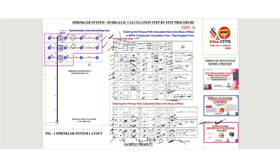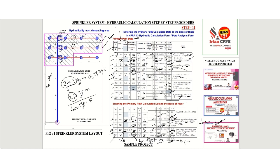The required flow is 214.1 GPM at 33.7 psi, excluding hose stream allowance. For ordinary hazard applications, the hose stream allowance is 250 GPM; for light hazard it is 100 GPM; for extra hazard it is 500 GPM. Adding 250 GPM hose stream allowance to 214.1 GPM gives a total project requirement of 464.1 GPM at 33.7 psi.